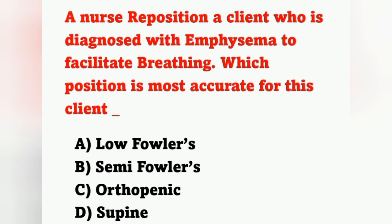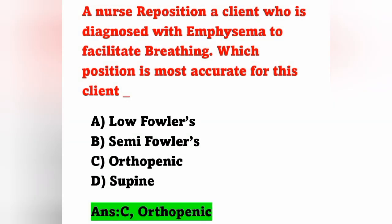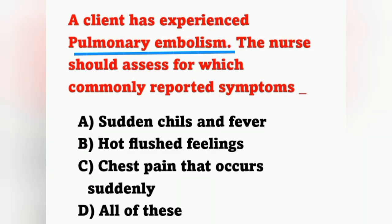Next question: a nurse repositions a client diagnosed with emphysema to facilitate breathing. Which position is most accurate? Options: option A low Fowler's, option B semi-Fowler's, option C orthopneic position, option D supine position. For emphysema, to facilitate breathing, the orthopneic position — upright with leaning forward — is most accurate, as this allows the patient to breathe easily. Option C is the correct answer.